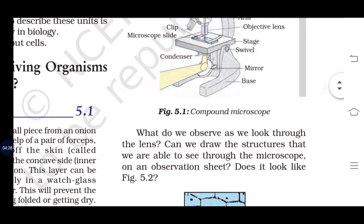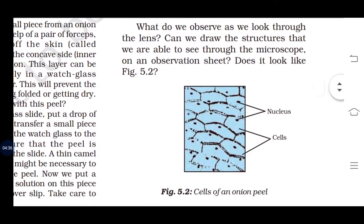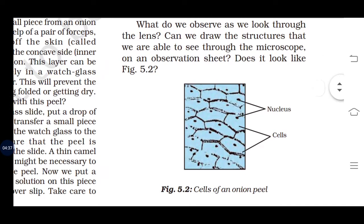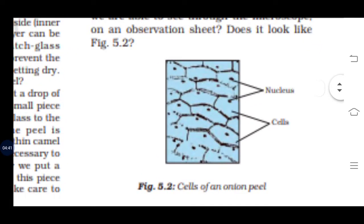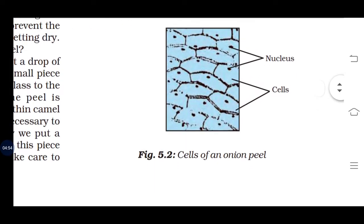What do we observe as we look through the lens? Can we draw the structure that we are able to see through the microscope? There are honeycomb structures — these are the structures we call cells, with the nucleus visible in the center. This is the cell of an onion peel.